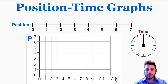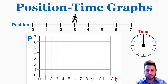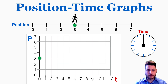This graph represents the position of an object after a certain amount of time has passed. I'm going to place a person starting at a position of 3, so when no time has passed yet they're at a position of 3. That means the y-intercept of the graph when time is equal to 0 is going to be a position of 3.